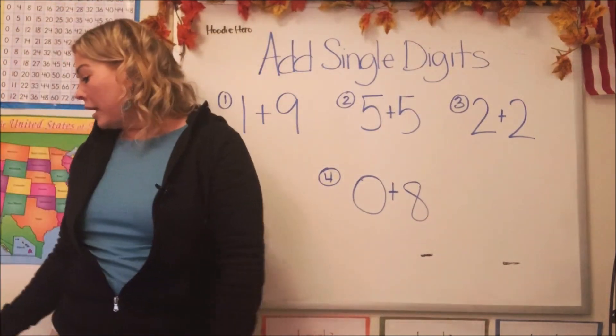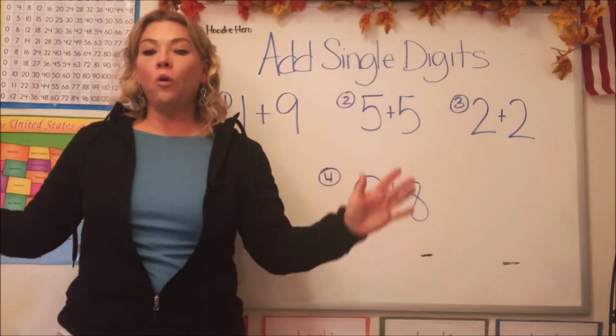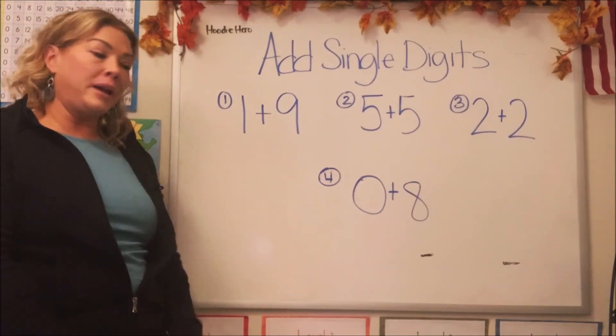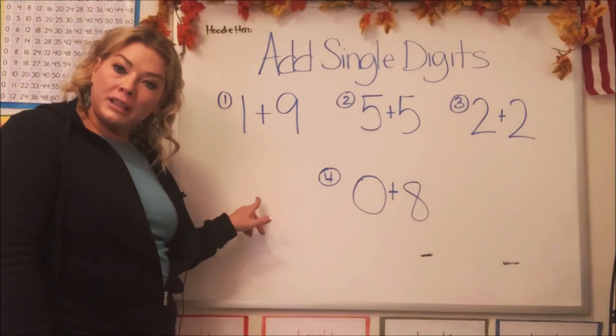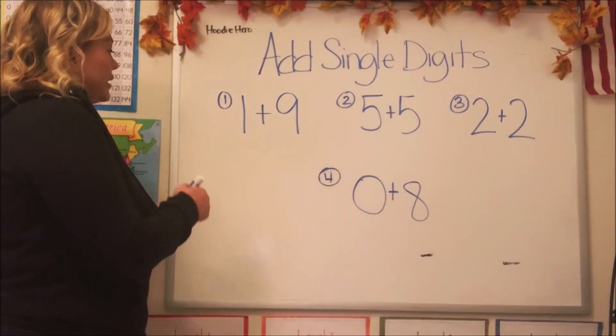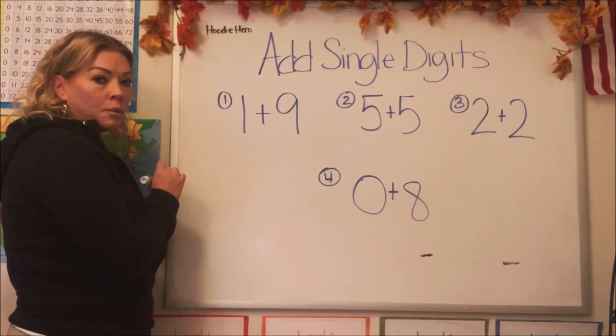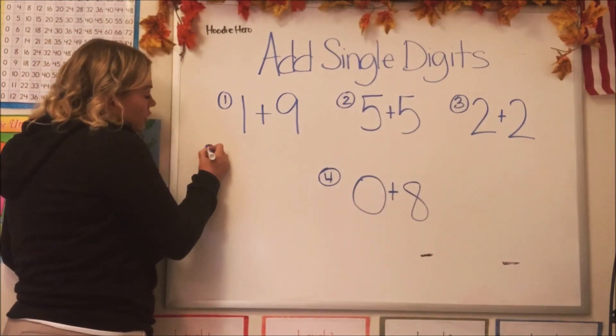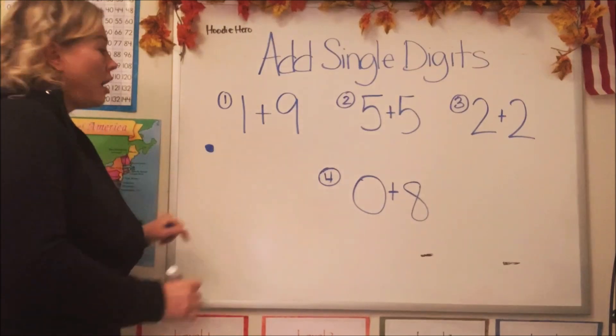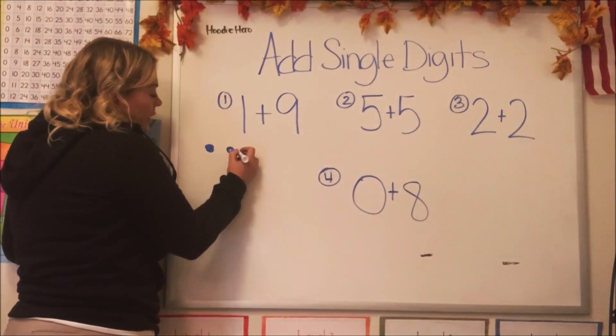So let's start with number one. Now, if you didn't have anything at home or you're doing a test and you can't use anything but your pencil and paper, you can draw manipulatives. You can draw a visual on your paper. Let's do that. So the first number is number one. Let's draw a little circle for number one. Next number is nine. Let's draw nine little circles.